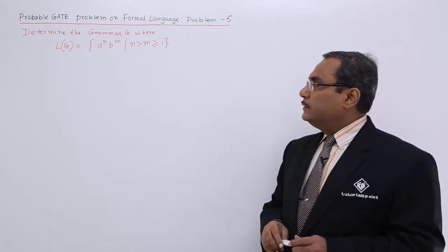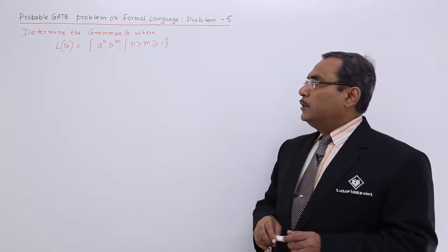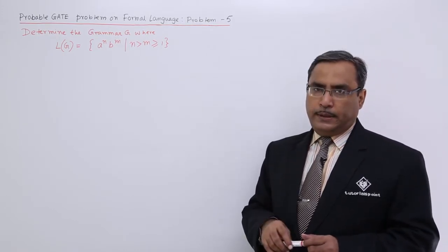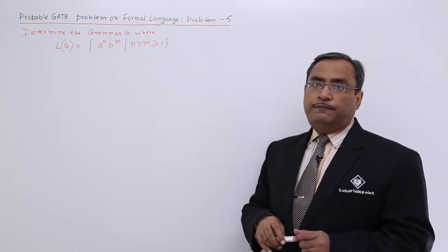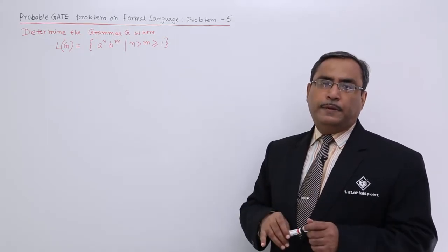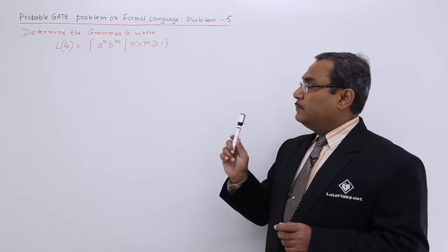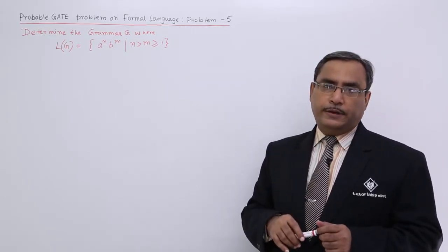That means it is asking that we can have more number of a compared to b. A can be 500 and b can be 1, that can also happen, but the number of a should be more than the number of occurrences of b.